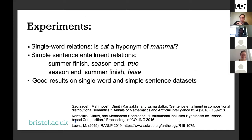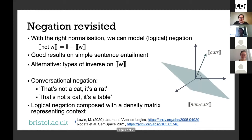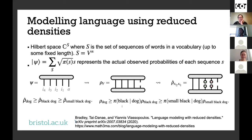In experiments, these representations work quite well. We can test them on single-word relations — for example, whether cat is an instance of mammal. We also interpret hyponymy as a simple entailment relation and examine whether the right relation holds between sentence representations, such as 'summer finish season end' holding versus 'season end summer finish'.